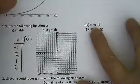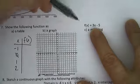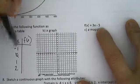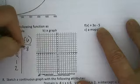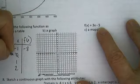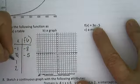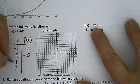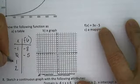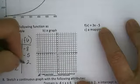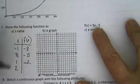If x is negative 1, 3 times negative 1 is negative 3 minus 5 is negative 8. If x is 0, my output is negative 5. If x is 1, 3 times 1 is 3 minus 5 is negative 2. If x is 2, 3 times 2 is 6 minus 5 is positive 1.